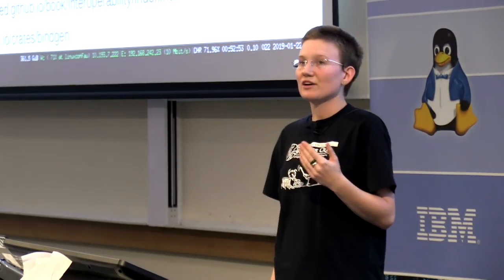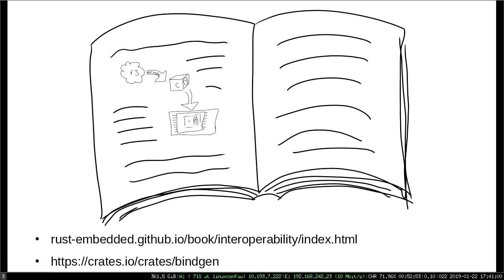You might find yourself wanting to use some C code alongside some Rust code in an embedded context, or vice versa. The embedded Rust book goes into great detail on how to interoperate between embedded Rust and embedded C. If you're integrating between C and Rust, you'll probably find yourself writing a lot of foreign function interface bindings between the two. Some of that binding-writing challenge can be automated using a crate called BindGen, which you can find on crates.io.